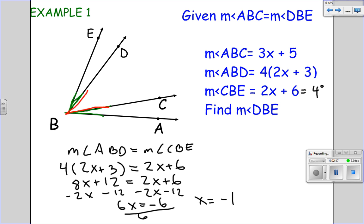So negative 1 times 2 is negative 2 plus 6 equals 4, and 4 degrees is a possible angle measure. Negative 1 times 3 is negative 3 plus 5 is positive 2, which is also possible. And negative 1 times 2 here is negative 2 plus 3, which gives you 1 times 4 equals 4 degrees. So all of these angle values are possible, thus x equals negative 1 is a possible solution.